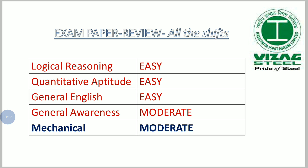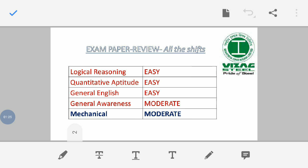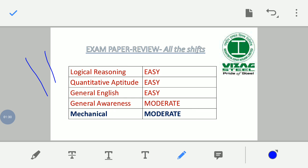In general awareness, questions were asked on abbreviations, current affairs, and history. For history, there was a question about Babur — who was the Mughal emperor. Questions about the Mughal emperor were asked in the exam.